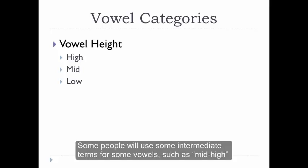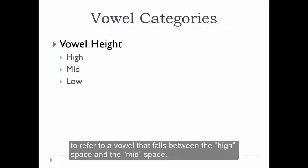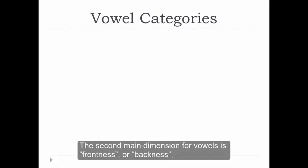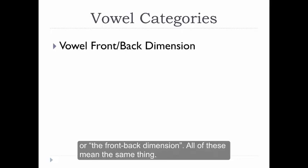Some people will use some intermediate terms for some vowels, such as mid-high, to refer to a vowel that falls between the high space and the mid space. The second main dimension for vowels is frontness, or backness, or the front-back dimension. All of these mean the same thing.